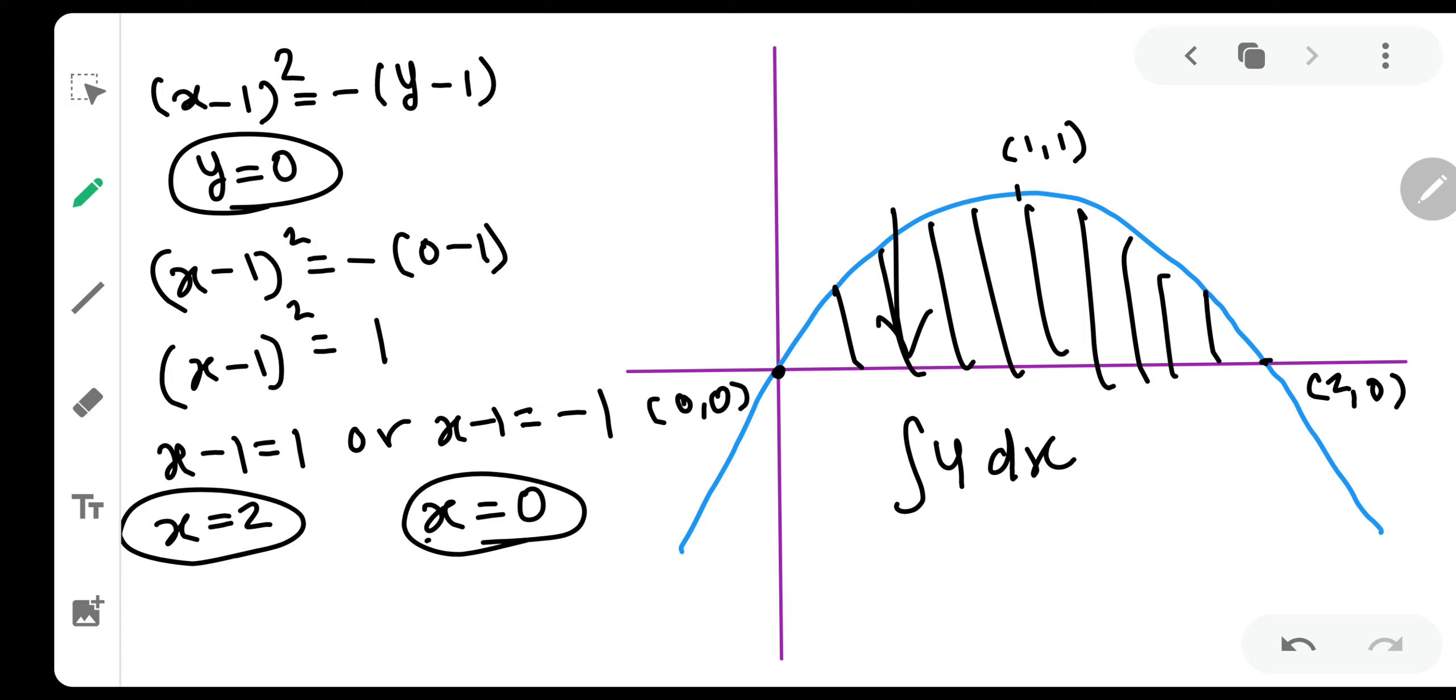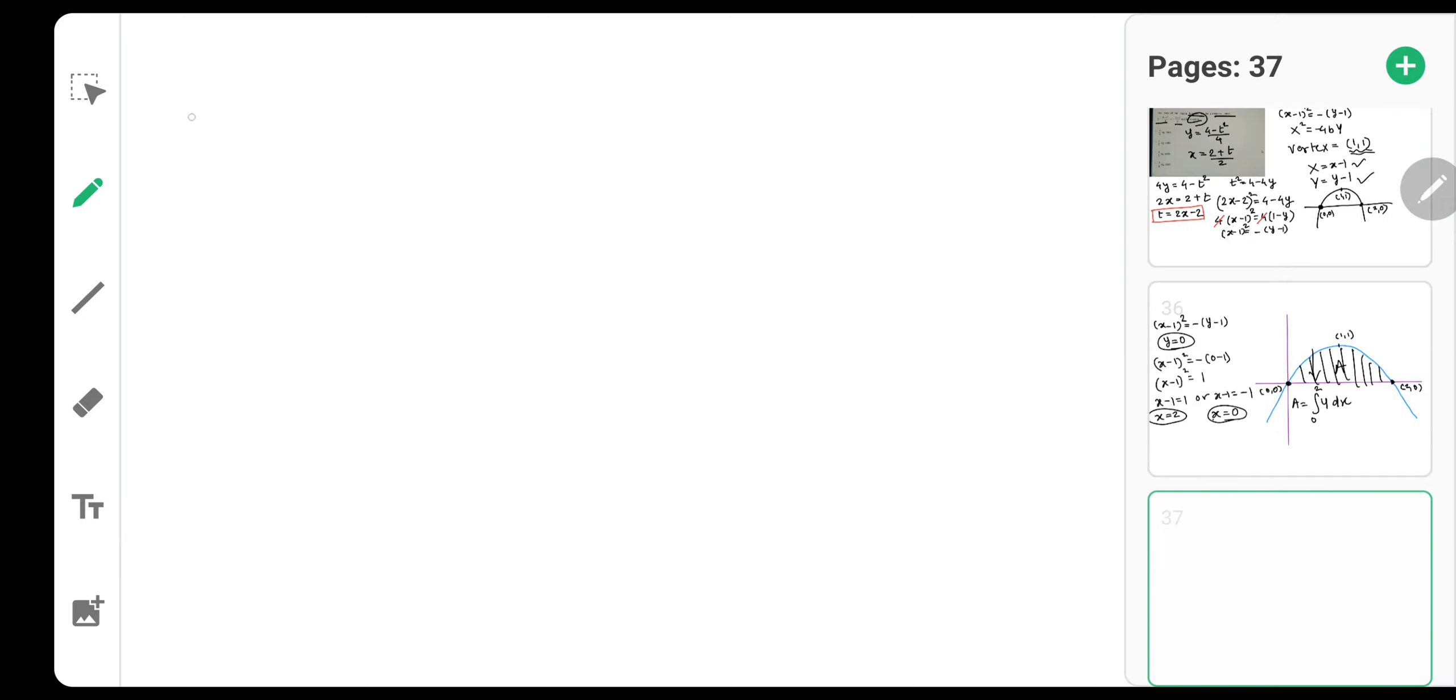So the answer will be integration y dx. From where to where? From 0 to 2. So from 0 to 2 y dx you integrate and you get this area. So simple. So let us move. We have x minus 1 the whole square equal to 1 minus y.